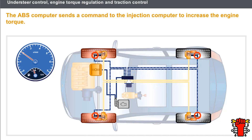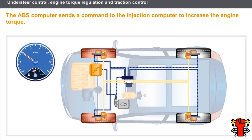The speed sensors for the ABS system detect the locking of the wheels. A program built into the ABS computer sends a command to the injection computer to increase the engine torque. The command is maintained until the wheels stop slipping.